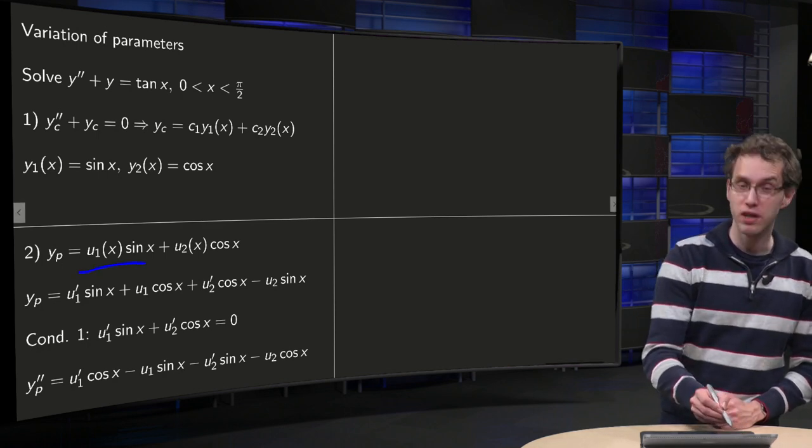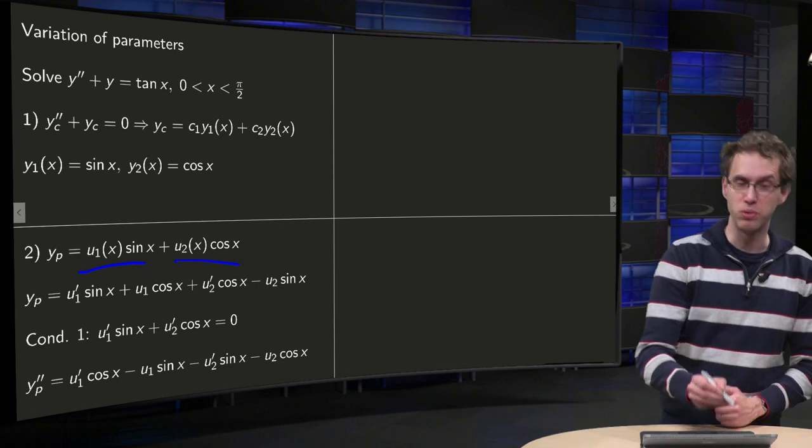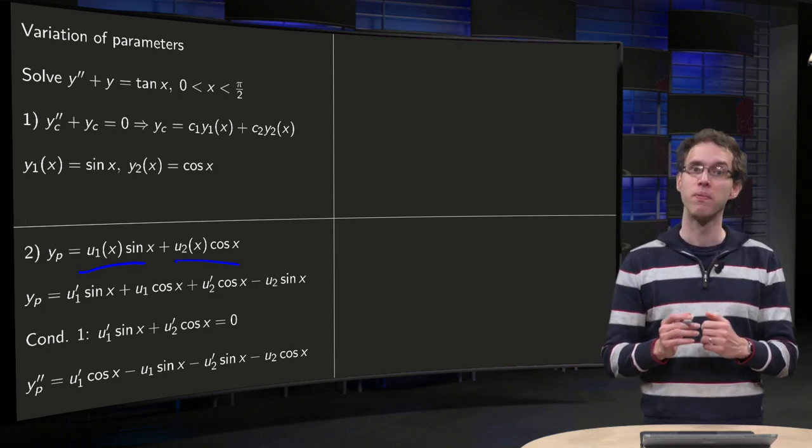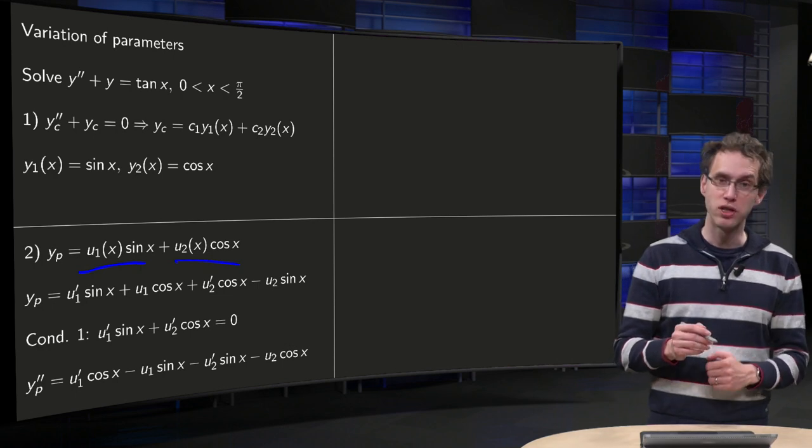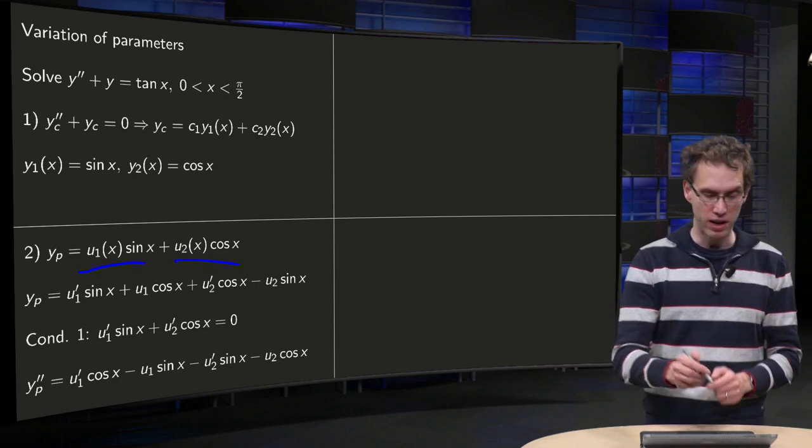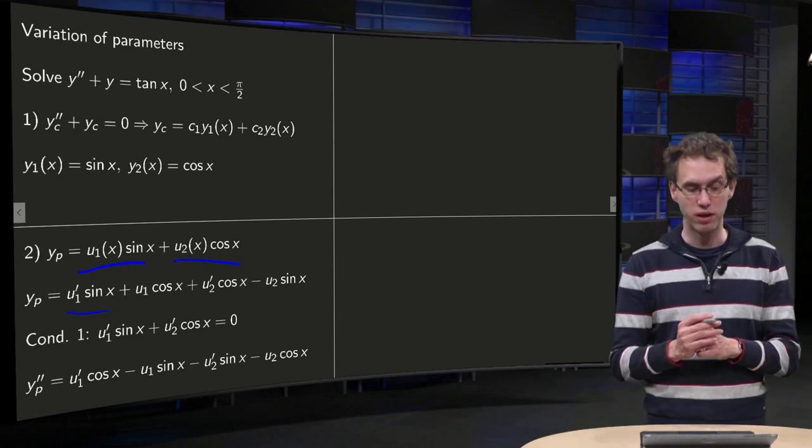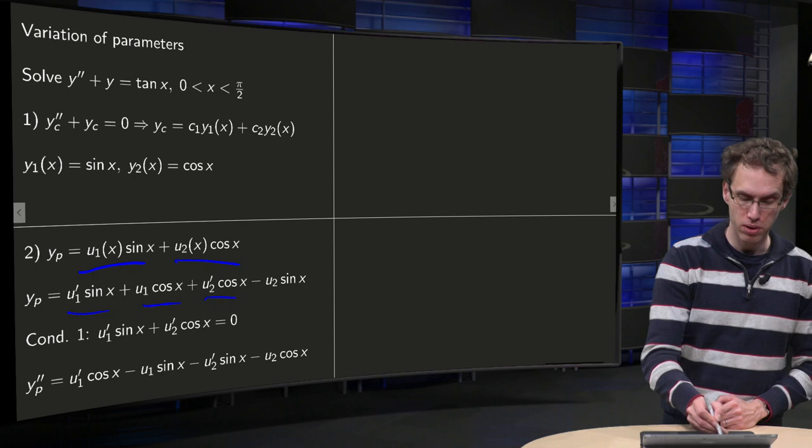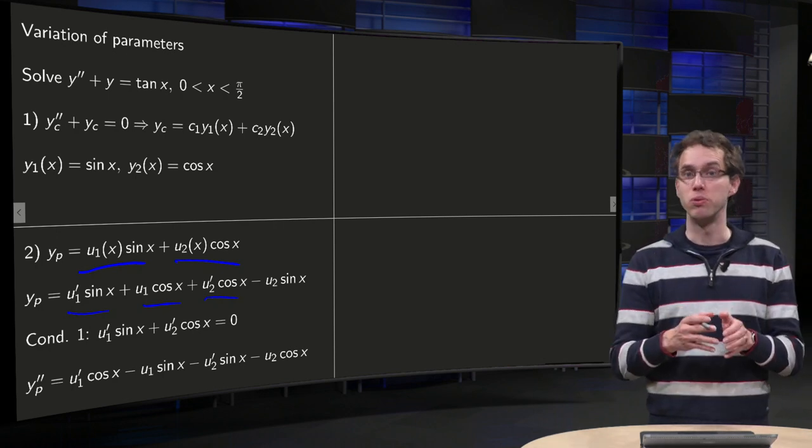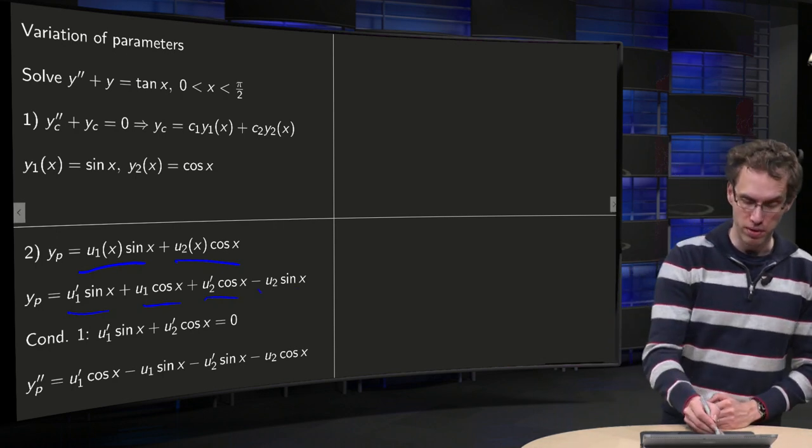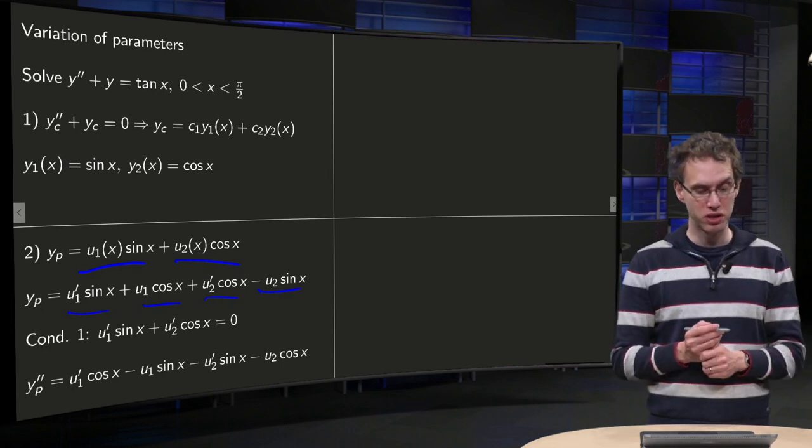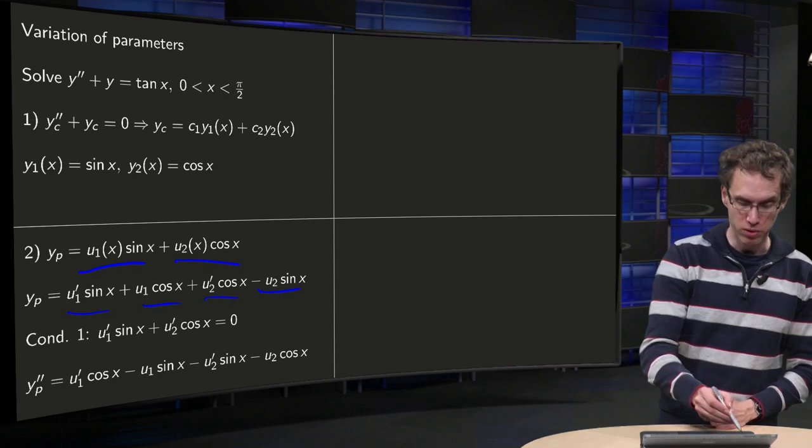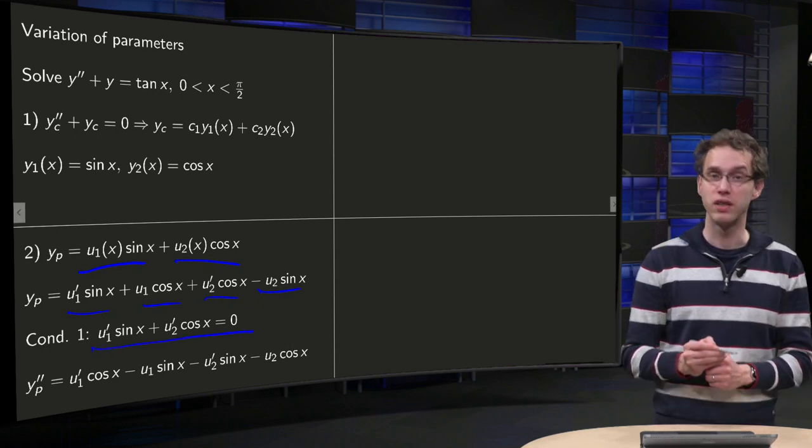So we put yₚ = u₁·y₁ + u₂·y₂, where y₁ = sin(x) and y₂ = cos(x). Then we differentiate, so we get u₁'sin(x) + u₁cos(x) + u₂'cos(x) + u₂(-sin(x)). And then our first condition would be to set the terms with u₁' and u₂' equal to 0. So that's this part equals to 0.